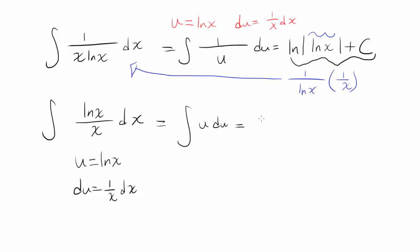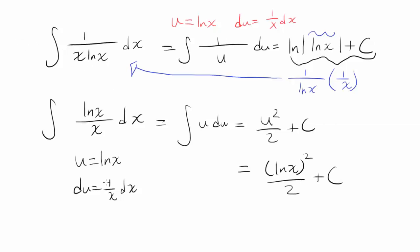So in this case you have u squared over 2. And our u is natural log of x. So we have natural log of x squared over 2 plus C. Now before I end this video I want to point out something.